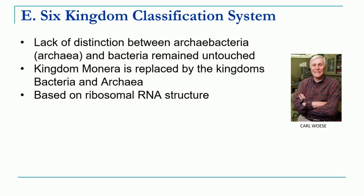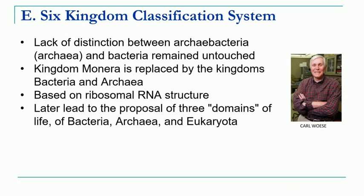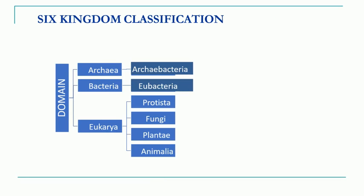Earlier there was a lack of distinction between archaebacteria and bacteria. So kingdom Monera, which was proposed by R.H. Whittaker, is now replaced by two kingdoms by Carl Woese — these two newly formed kingdoms are Bacteria and Archaea. This classification was based on ribosomal RNA structure studies. Later this six-kingdom classification system led to the basis for what is known as the three-domain system, where Bacteria, Archaea, and Eukaryota are the three domains.